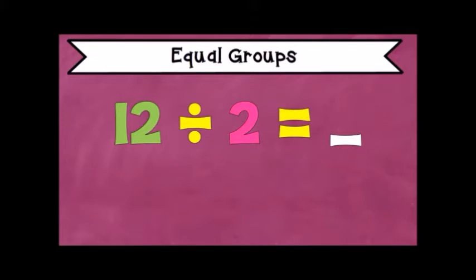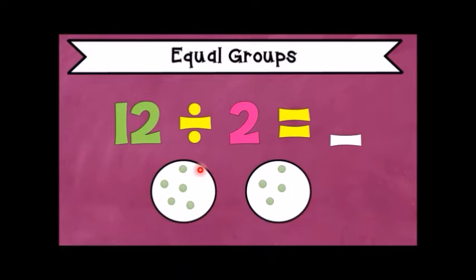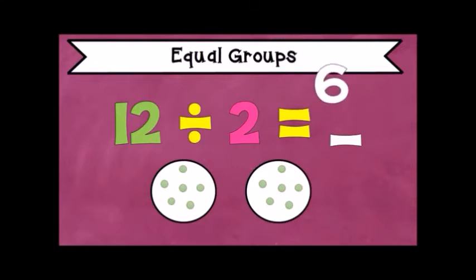Let's try another example: 12 divided by 2. We know that we need 2 groups — 2 is the divisor. We'll divide 12 counters evenly among the 2 groups: 1, 2, 3, 4, 5, 6, 7, 8, 9, 10, 11, 12. We stop on 12. How many counters are inside each group? 1, 2, 3, 4, 5, 6. So 12 divided by 2 is equal to 6.